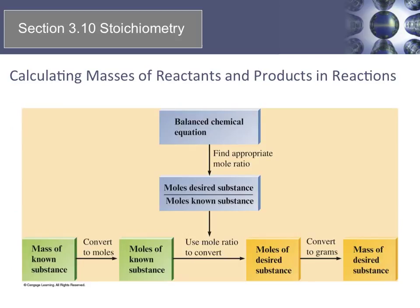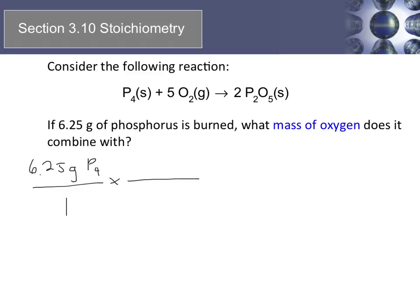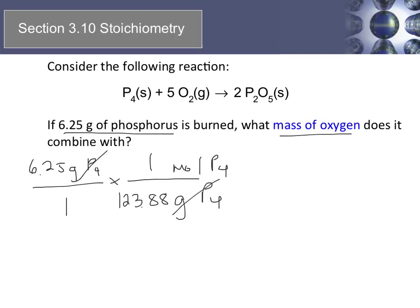When doing stoichiometry with mass, we'll have the mass of a known substance, convert it to moles, use the mole ratio to find the moles of the desired substance, then convert back to grams. In this example, we have 6.25 grams of phosphorus and want to know the mass of oxygen that reacted. We cancel the units of grams of phosphorus, and to use a mole ratio to switch from phosphorus to oxygen, we need to convert to moles. We'll need the molar mass for phosphorus times 4, because it's P4. Grams of phosphorus cancel and now we have moles of phosphorus.